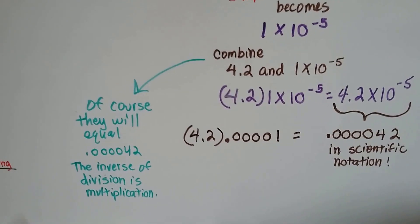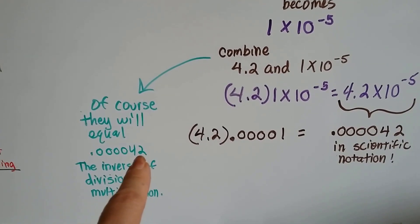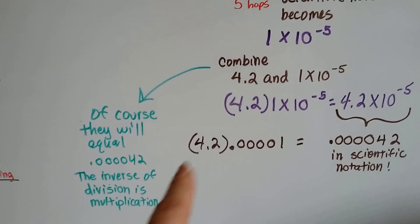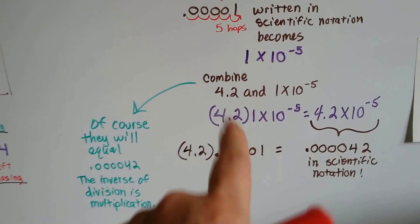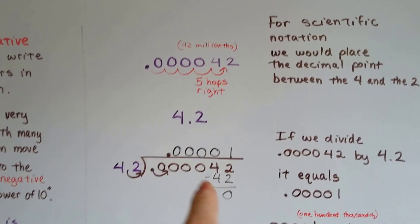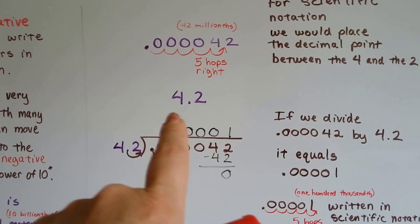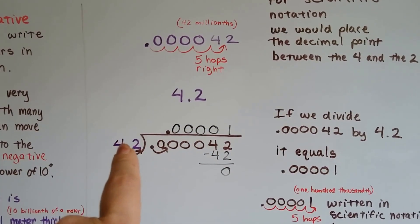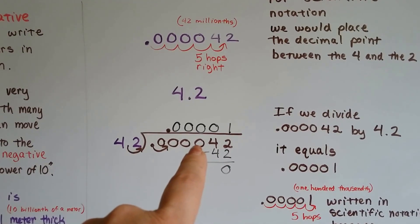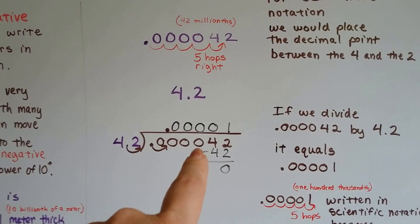Of course, this is going to equal the original 42 millionths, because the inverse of division is multiplication. If we're going to multiply this right now, like it's telling us to combine it, it's going to put us right back up to here. We just divided this into here and got that as the quotient. If we multiply this 100,000th by the 4.2, it's going to put us back to the original number here.